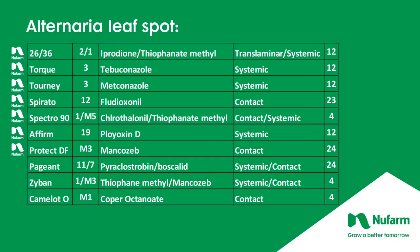Alternaria leaf spot has multiple efficacious materials including 26/36, Torque, Tourney, and Spirato, as well as Spectro 90, Affirm, Protect DF, Pageant, Zyban, and Camelot-O. There is a combination of systemic and contact products, with some dual-activity products like Spectro 90, Pageant, and Zyban combining systemic and contact activity into one material.